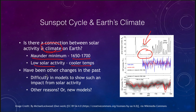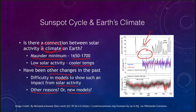There have been other climate changes in the past, but it is difficult to model and understand the full impact from solar activity. Does that mean there are other reasons for these changes, or do we need newer models? Continued research will be needed, along with more data, to better understand what sunspot cycles look like over the long term.